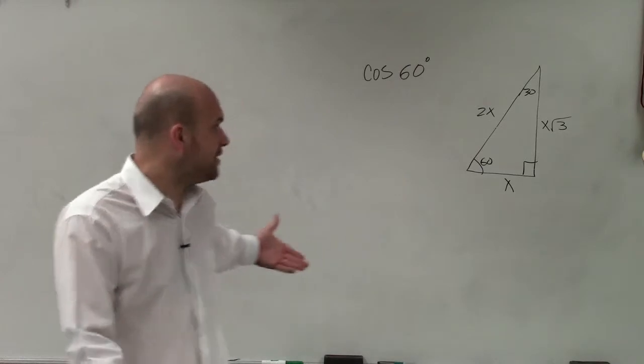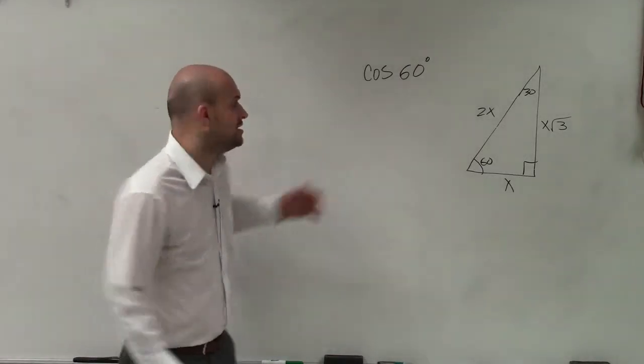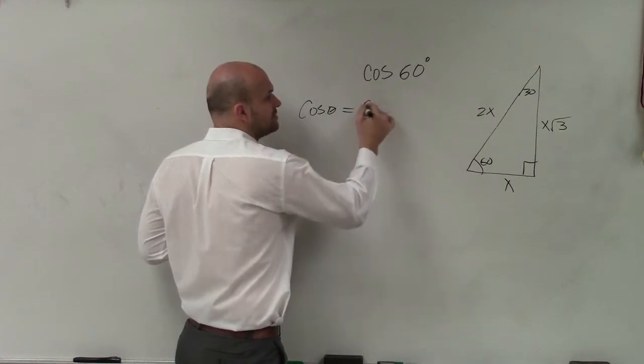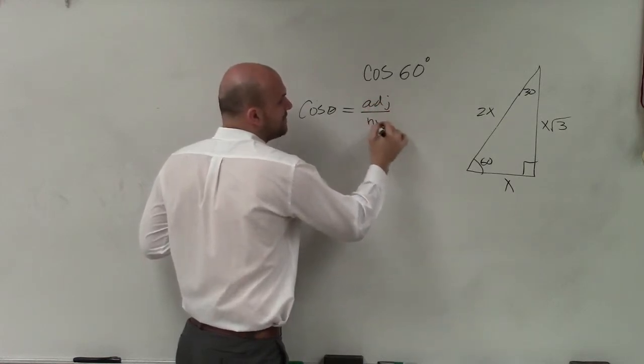Now, if I want to evaluate for the cosine of 60 degrees, remember the cosine of any angle equals the adjacent over the hypotenuse.